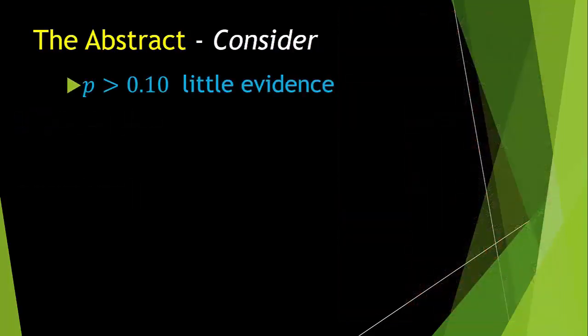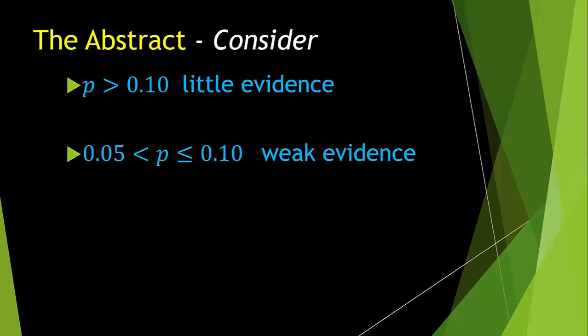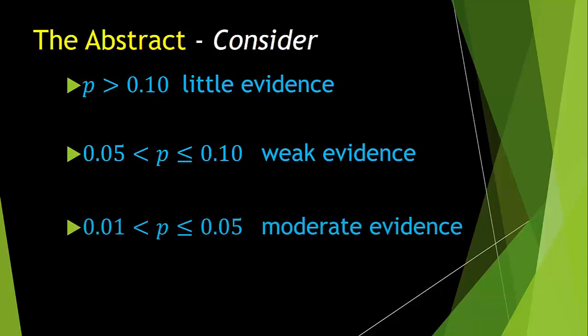If the researcher reports a p-value greater than 0.10, then they should be saying there is little evidence against the null hypothesis. If their p-value is between 0.05 and 0.10, then there is weak evidence against the null hypothesis. These first two can be read as there is little or weak evidence of statistical significance. In other words, any differences seen could very possibly be due to mere chance alone. Now we move into the range of p-values where statistical significance is generally concluded. If p lies between 0.05 and 0.01, we can say there is moderate evidence against the null hypothesis.